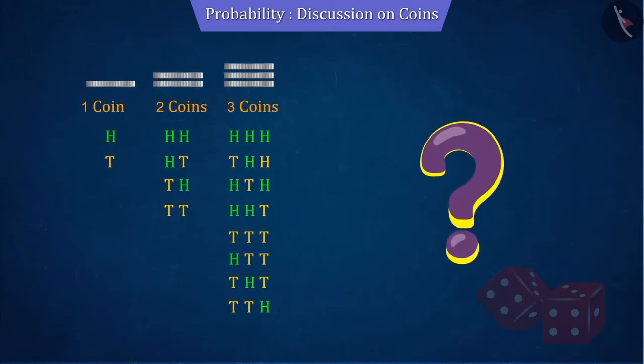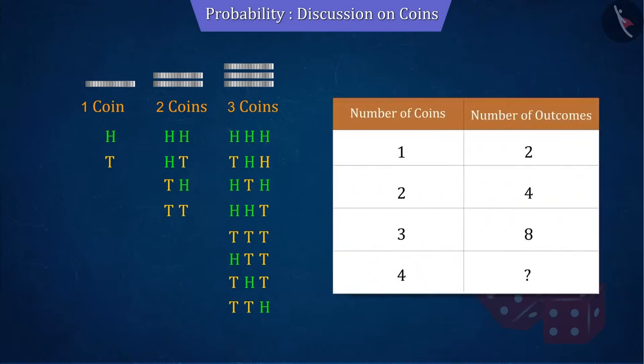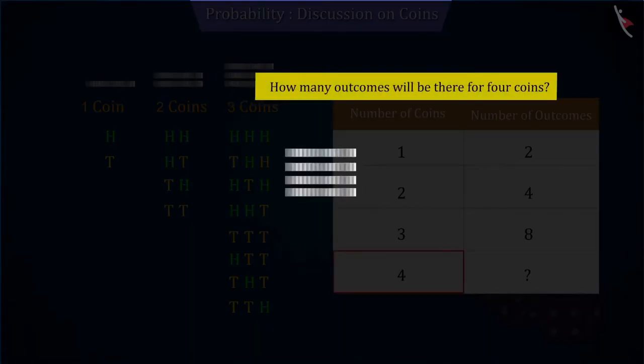But did you see some correlation between the number of coins and the number of total results in these examples? Yes, we saw that there are two outcomes for one coin, four outcomes for two coins, and eight outcomes for three coins. So, can you tell how many outcomes will be there for four coins?